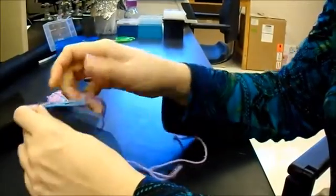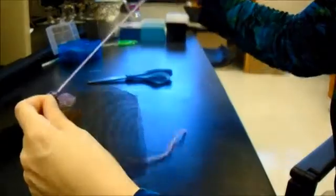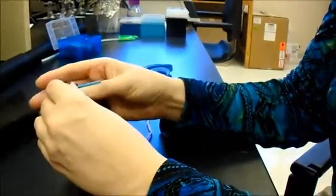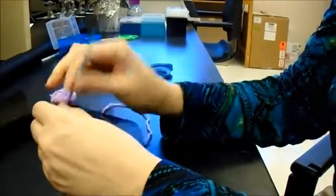I use a basic running stitch. You just want to make sure that your stitches are close enough together that none of the plant material falls out of the bag. Continue that running stitch all along the first edge.